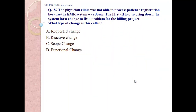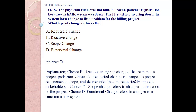Question number 87: The physician clinic was not able to process patient registration because the EMR system was down. The IT staff had to bring down the system for a change to fix a problem for a billing project. What type of change is this? A. Requested change, B. Reactive change, C. Scope change, D. Functional change. Answer B: Reactive change. Explanation: Reactive change is a change that responds to a project problem. Requested change is a change to project requirements, scope, and deliverables that are requested by project stakeholders.